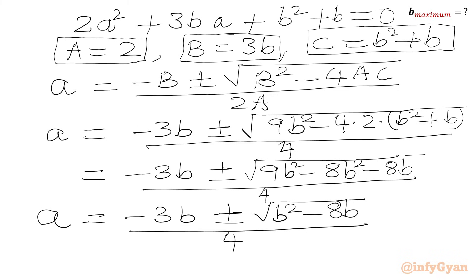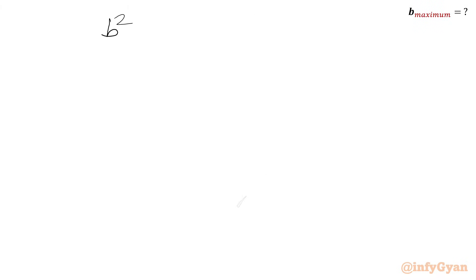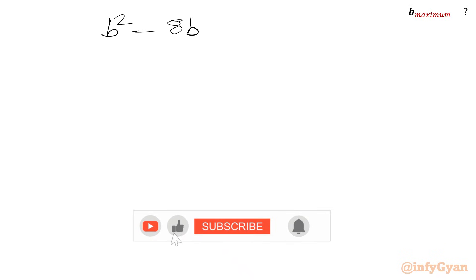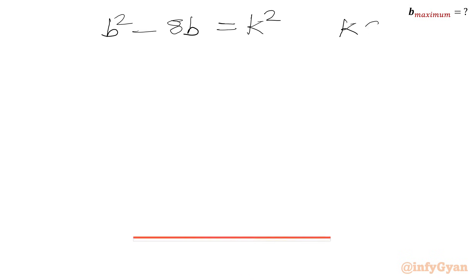Since a is an integer, the square root must be a rational number — that is, the radicand must be a perfect square. So we set b² − 8b = k², where k is a positive integer.